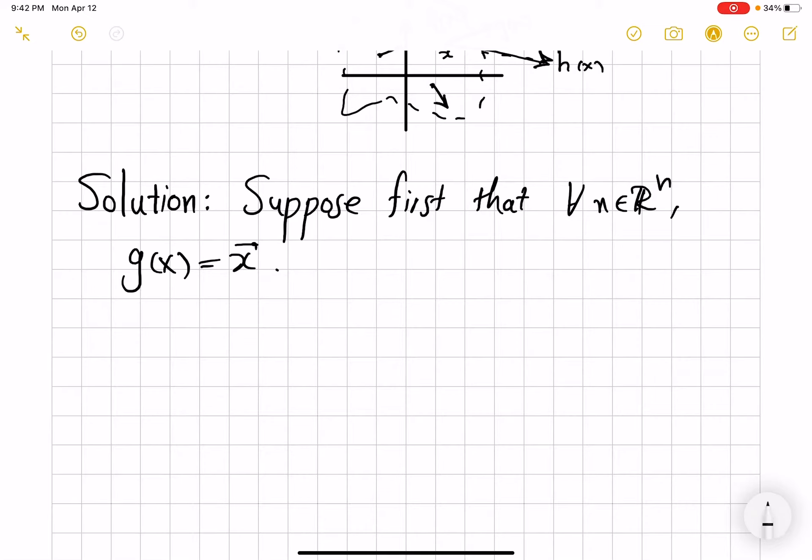So we have the fundamental theorem of calculus. We know that for every x in ℝⁿ, f(x) minus f(0) is integral from 0 to 1 of the dot product of derivative along the line segment that joins 0 to x with the vector x minus 0, dt.